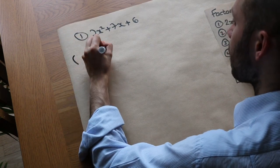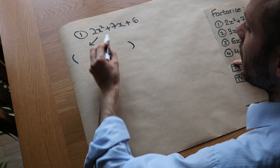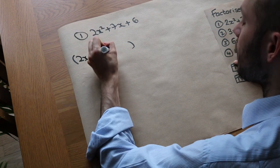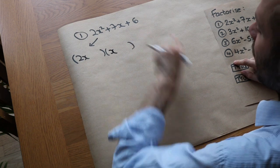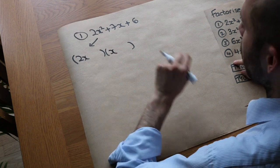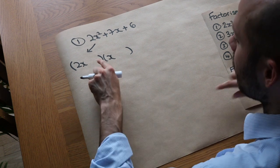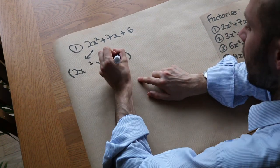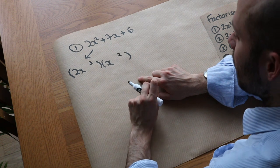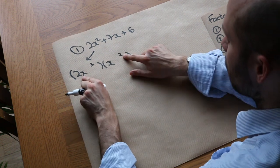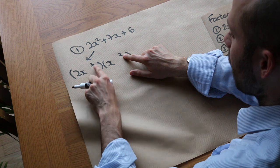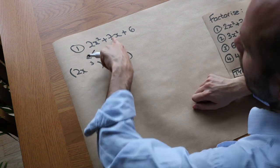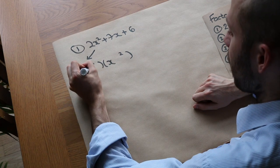We can have two brackets, and to get 2X squared it's probably going to be 2X and X. To get 6 it could be 6 and 1, or 3 and 2. Let's try 3 and 2: we've got 2X times 2 which is 4X, and 3 times X which is 3X. 4X plus 3X is 7X — so that is indeed the correct factorisation.